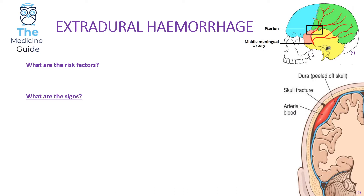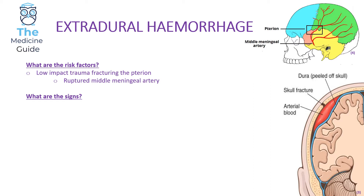Initially we're going to be looking at extradural hemorrhage. Note that epidural hemorrhage and extradural hemorrhage are terms used interchangeably — they refer to the same pathology. Essentially you've got arterial blood collecting between the skull and the dura, due to the rupture of the middle meningeal artery which overlies the pterion. It classically arises from a low impact trauma which fractures the pterion and ruptures the middle meningeal artery.